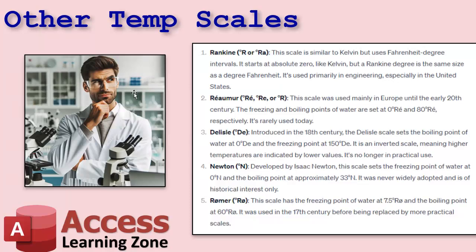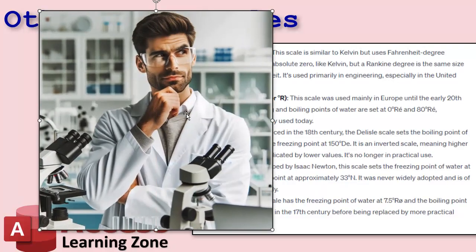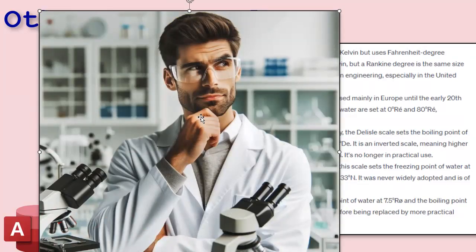I used ChatGPT to generate a picture for this and, of course, leave it to ChatGPT to get the number of fingers wrong — one, two, three, four, five, and there's a thumb under there somewhere. Their image generation with DALL-E is looking really good overall, but they still can't get fingers right and occasionally get text wrong. The AI is closing in on perfection but it's still got a little ways to go.